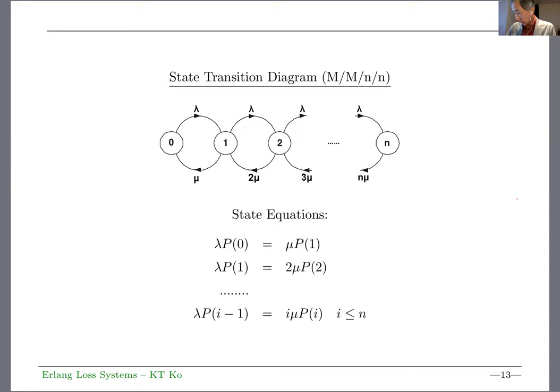Two features I want to talk about: the arrival rate is constant because the number of customers is very large, so having n customers in the system doesn't affect the arrival rate too much. The other is state-dependent departure rates: n mu, three mu, two mu, one mu. If one counter serves 12 customers per hour, two counters serve 24 customers per hour.